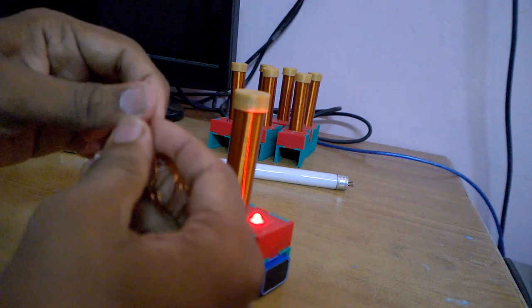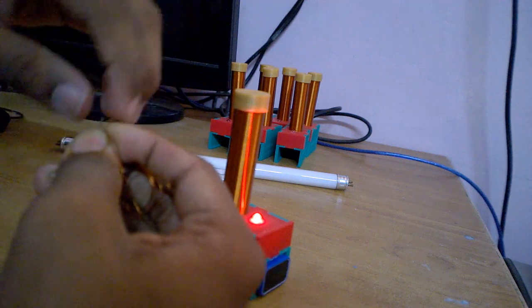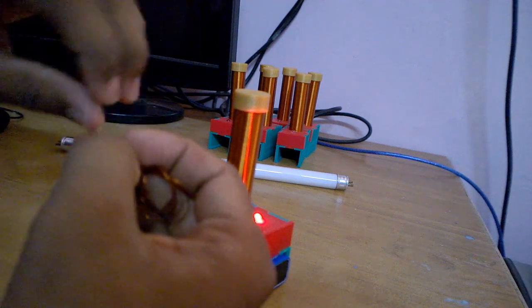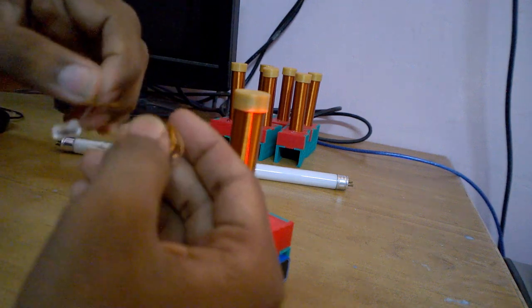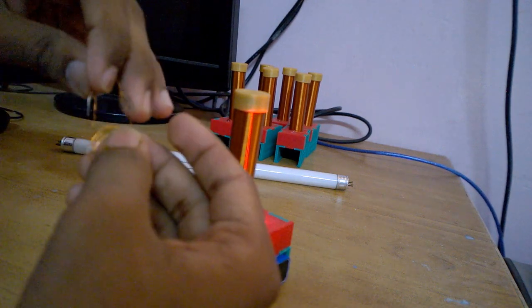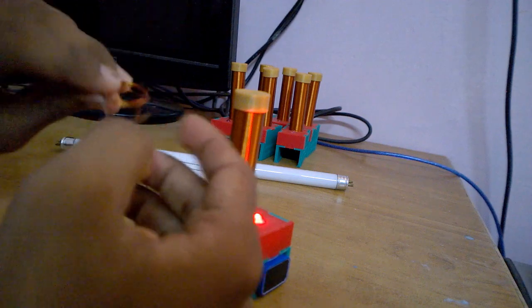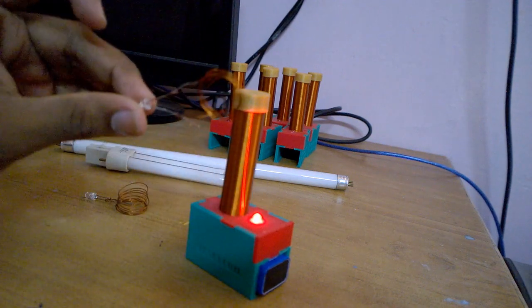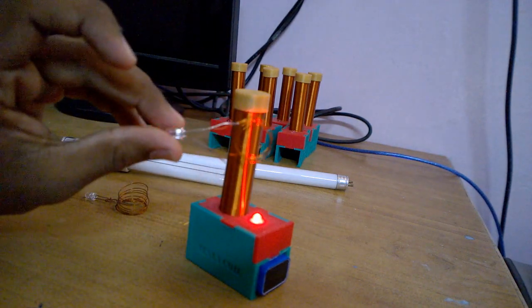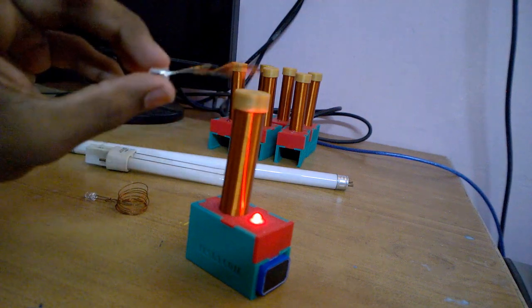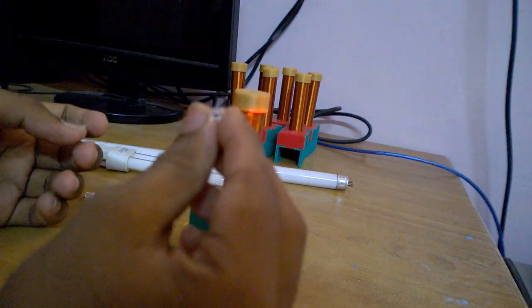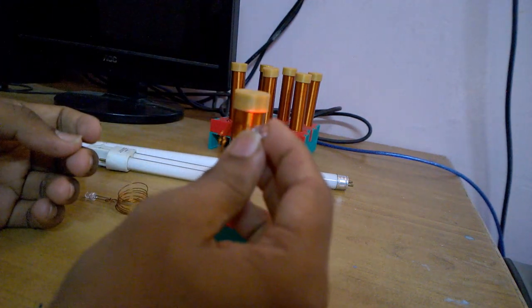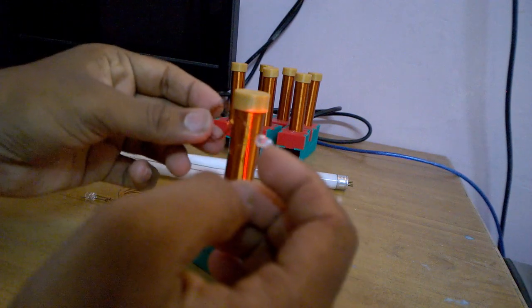Before connecting it to the LED, remove the insulation from the copper coils. Now I have made a wireless device. The LED is going to glow wirelessly.